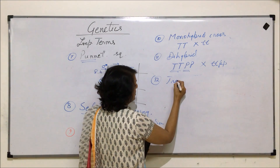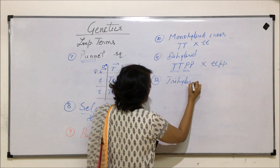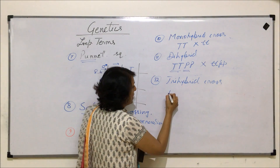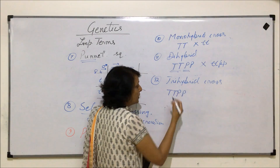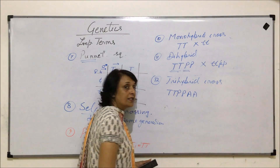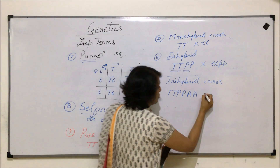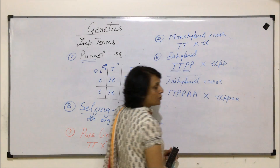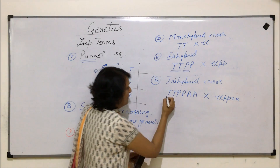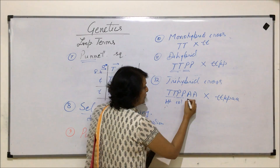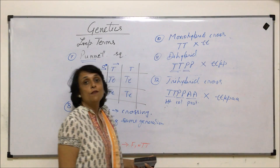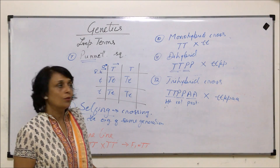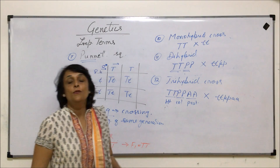The next term is trihybrid cross. A trihybrid cross involves three characters being taken into account. For example, a tall plant with purple flowers and axial position of the flower crossed with a short plant with white flowers and terminal position of the flower — we have taken height, color of the flower, and position of the flower. So monohybrid cross considers one trait, dihybrid considers two, and trihybrid considers three characters.